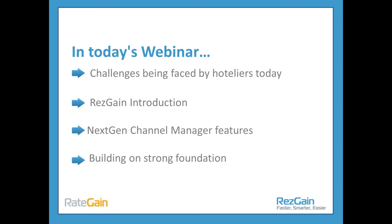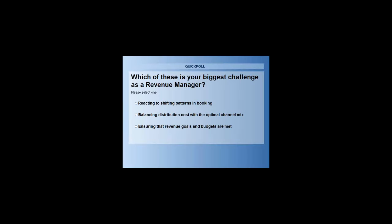Our second poll question is: which of these is your biggest challenge as a revenue manager? Is it reacting to shifting patterns in bookings? Is it staying on top of your open and closed channels? Is it balancing your distribution cost with the optimal channel mix and maximising your ROI? Or is it about ensuring that revenue goals and budgets are met — is it all about the bottom line?